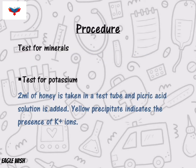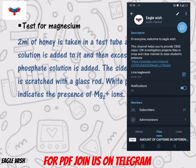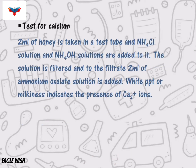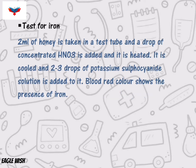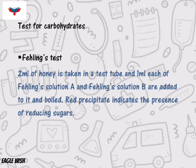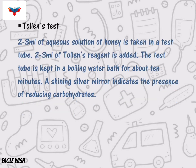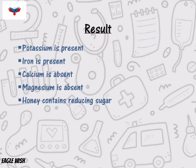After the theory, write the procedure of analysis. Firstly, we will test for minerals like potassium, magnesium, calcium, and iron. After minerals, we will test for carbohydrates — to determine the presence of carbohydrates we will perform Fehling's and Tollens' tests. At last, we will write about the results of the analysis.